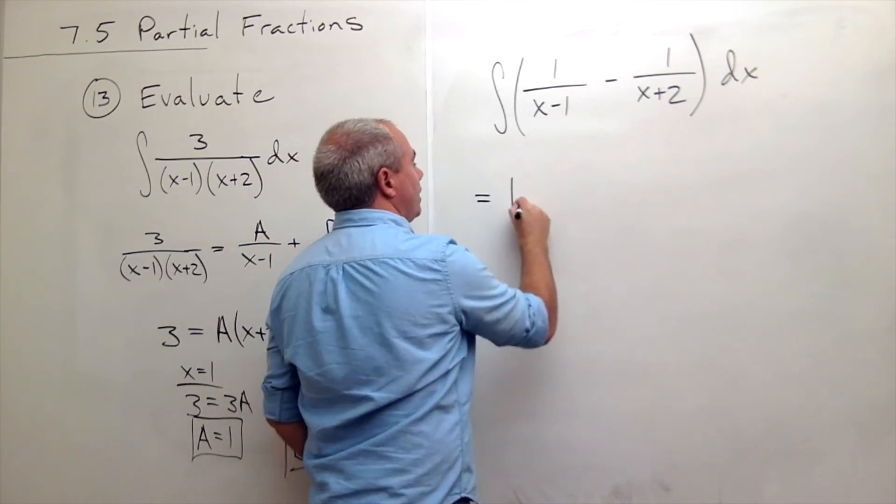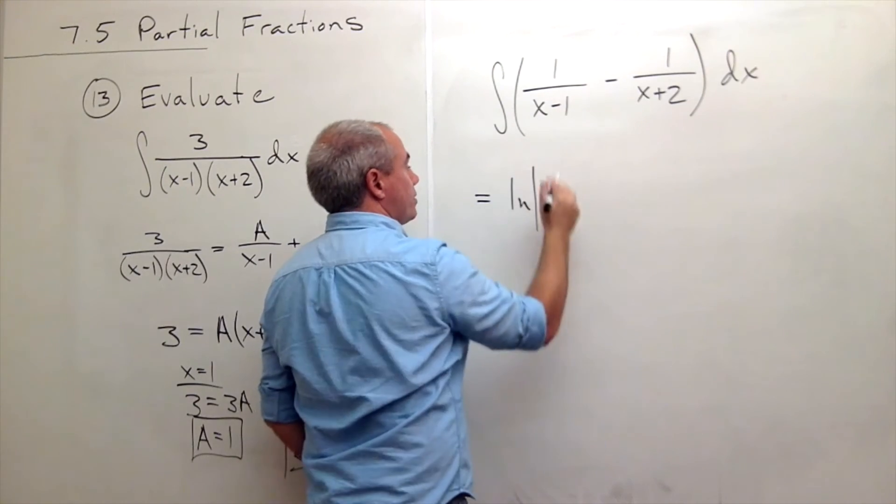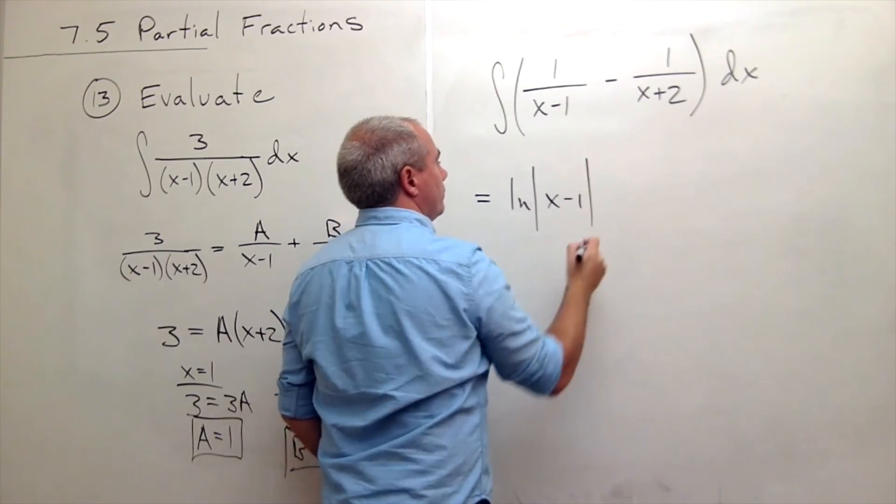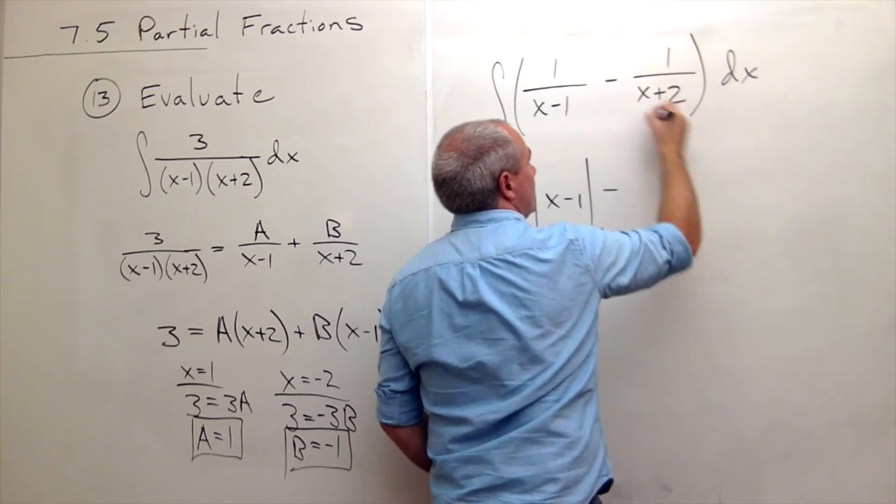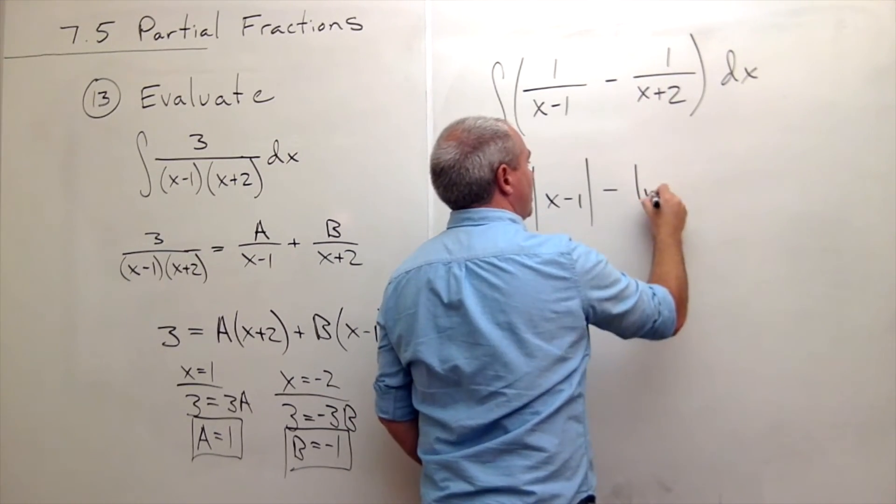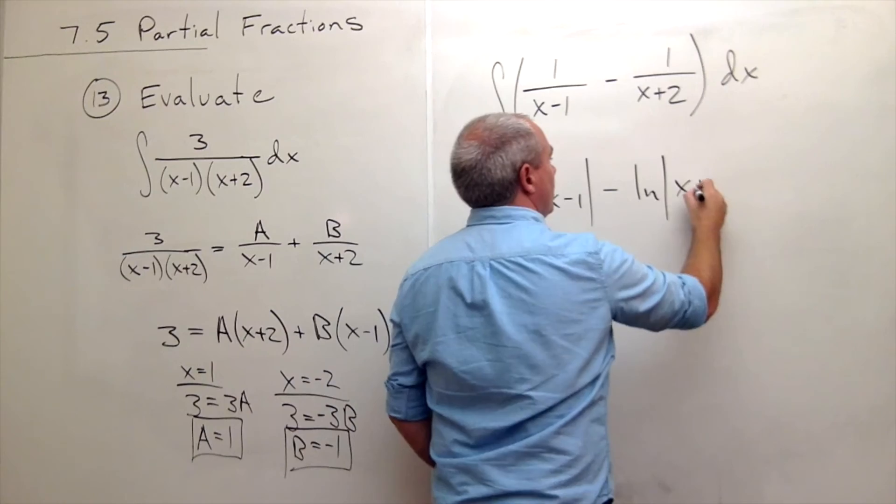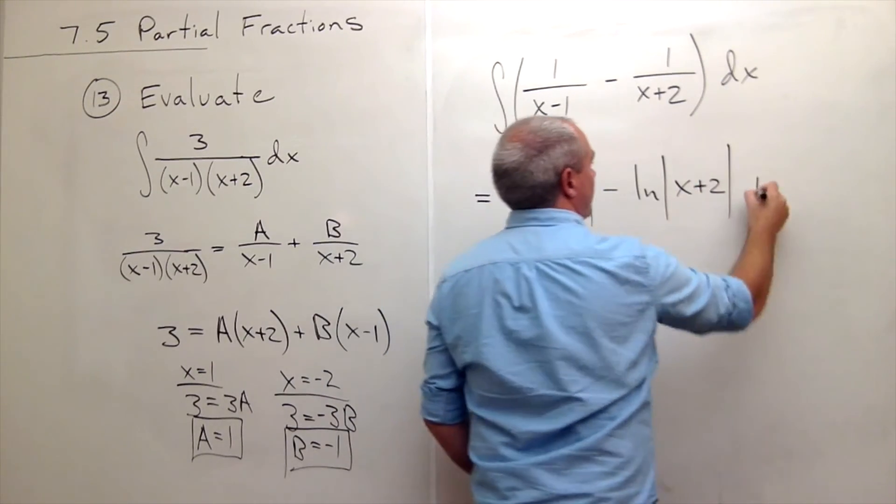So this one is ln of absolute value of what's on bottom. And this one, if we ignore the minus, this is a natural log. This is ln absolute value x plus 2, plus c.